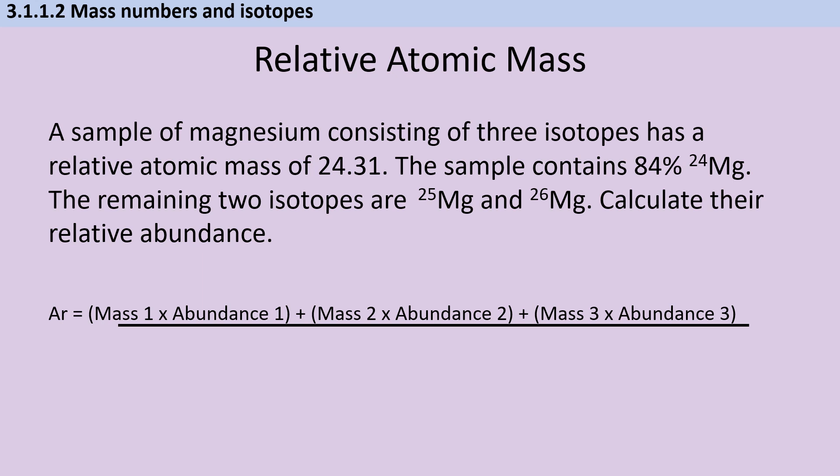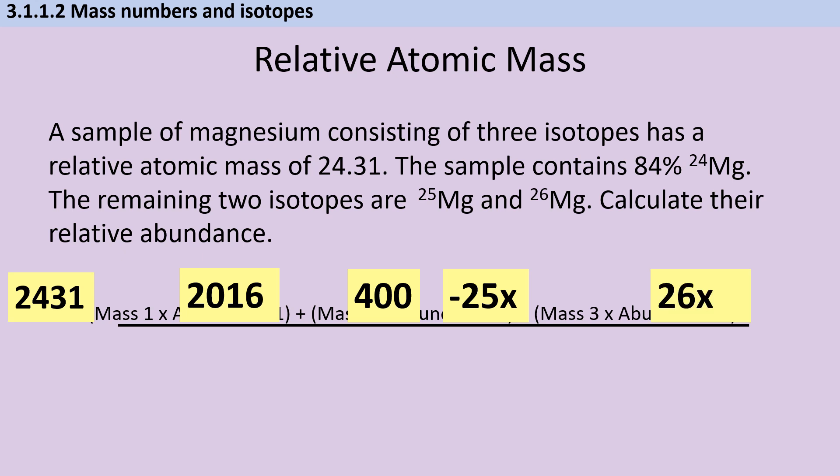I'm going to start by multiplying both sides by 100 to stop it from being a fraction. So that turns my left-hand side into 2431. Then I'm going to have the term that is made out of the 24 isotope and the fact that its abundance is 84, so that gives me 2016. Then for my isotope 25, the 16 multiplied by that 25 gives me 400, and then I've got minus 25x. And then for my final isotope, I've got 26x.